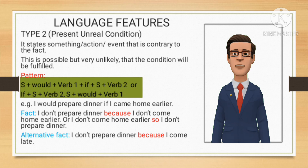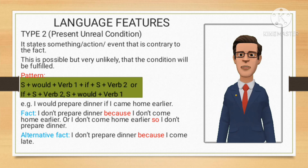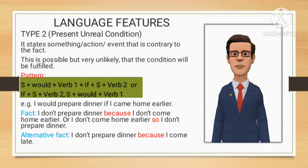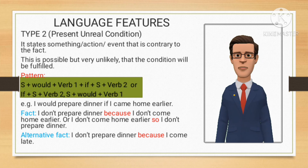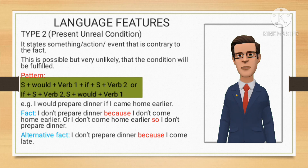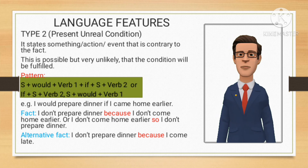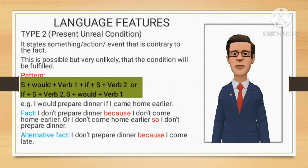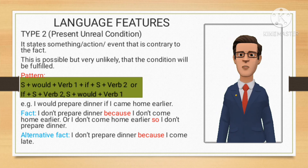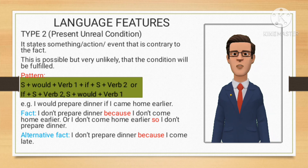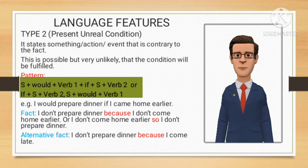Conditional sentence type 2 is different from type 1. It states something — an action or event — that is contrary to fact. This is possible but very unlikely that the condition will be fulfilled. The pattern of type 2: subject + would + verb 1, if + subject + verb 2; or: if + subject + verb 2, subject + would + verb 1. Example: 'I would prepare dinner if I came home earlier.' The fact: I don't prepare dinner because I don't come home earlier.